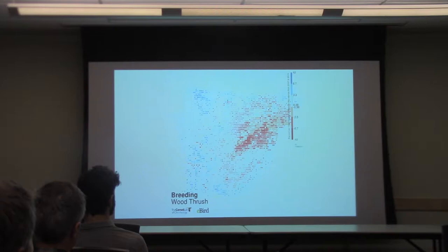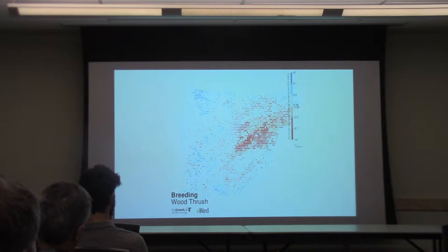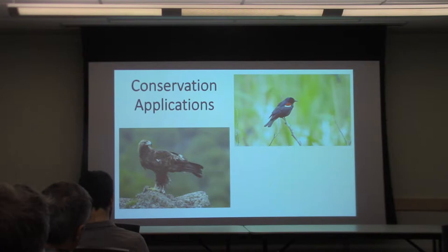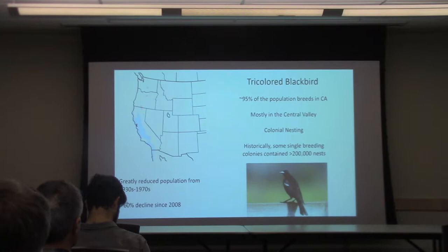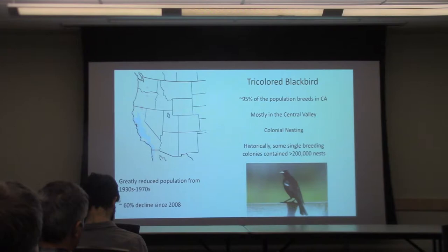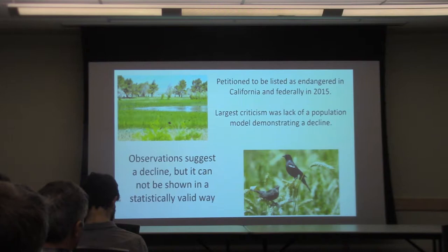We can produce some really cool products like this, but what I really want to show is how we use this stuff to benefit on-the-ground conservation. I'll go over a few projects: one on tricolor blackbirds, one on bald and golden eagles, and another on shorebirds. Tricolor blackbirds are almost entirely restricted to California. They've experienced a very rapid decline over the last 100 years, and even in the last 10 to 12 years a pretty huge decline. They were petitioned to be listed in California and federally in 2015, and one of the biggest criticisms was a lack of a population model that could demonstrate a decline.